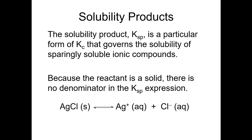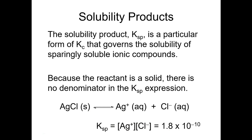A classic example of a sparingly soluble ionic compound is silver chloride. It will dissolve a little bit, governed by an equilibrium constant expression that is the product of the concentrations of the products raised to the power of their coefficients. Because the reactant is a solid, there's no denominator. For silver chloride, that KSP value happens to be 1.8 × 10⁻¹⁰, so you can see that silver chloride is not particularly soluble in water.